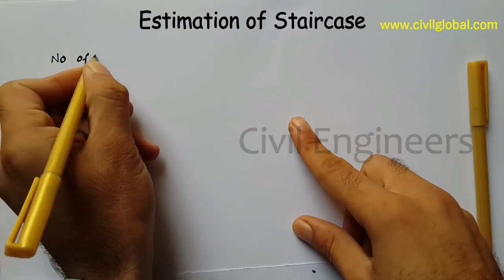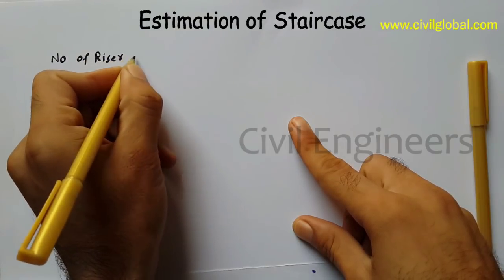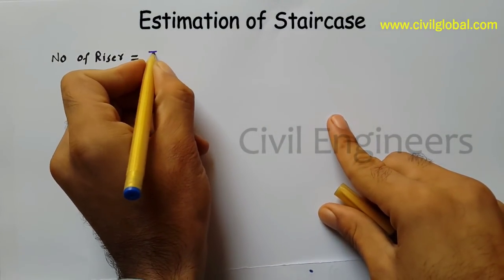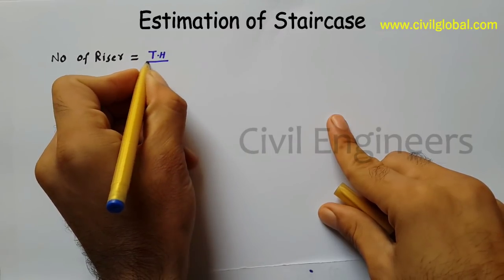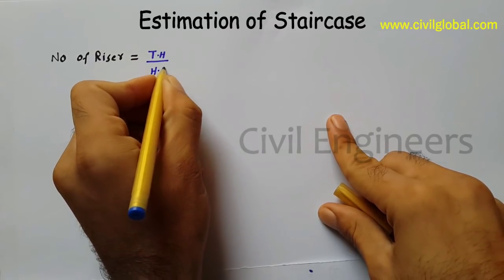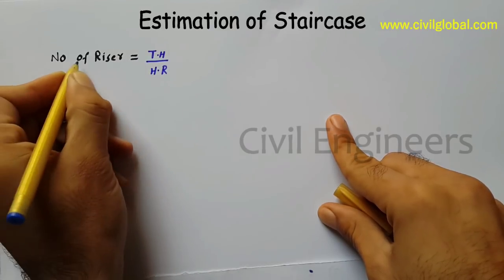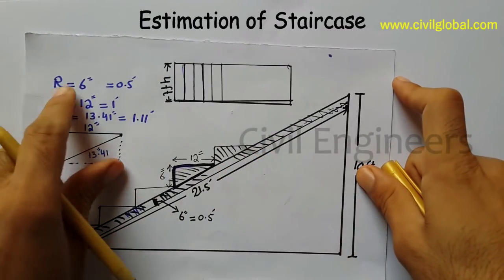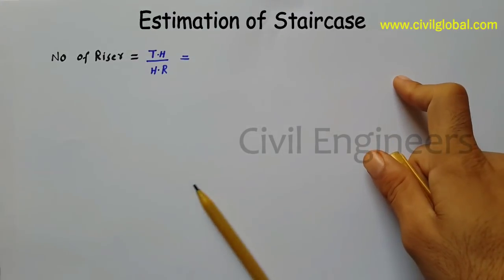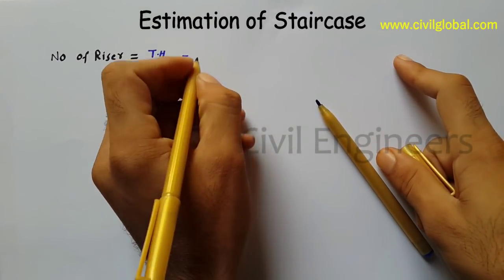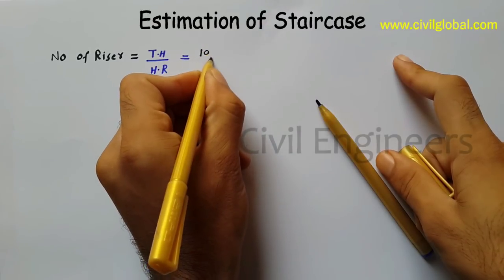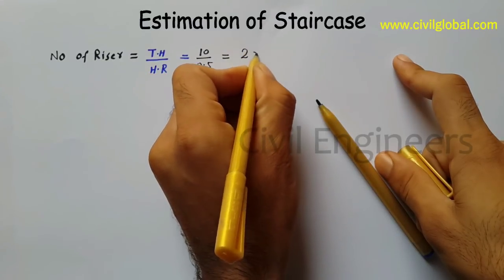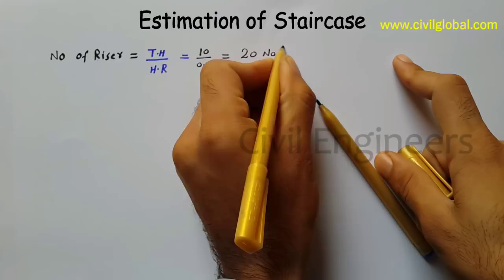Number of risers: when you want to find out the number of risers you use the formula — total height divided by height of riser equals number of risers. So total height is 10 feet and riser height is 6 inches equal to 0.5 feet. So 10 feet divided by 0.5 feet gives us 20 numbers of risers.